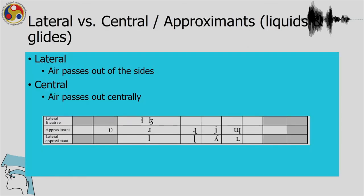In the languages of the world there are quite a few lateral fricatives. We have symbols for these lateral fricatives, and there are four lateral approximants and two lateral fricatives possible in the world's languages.